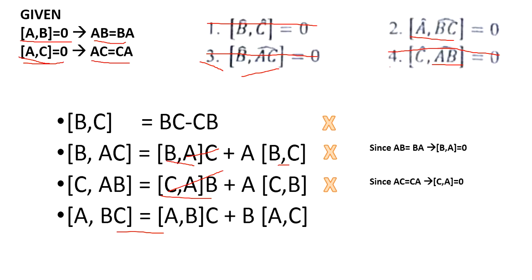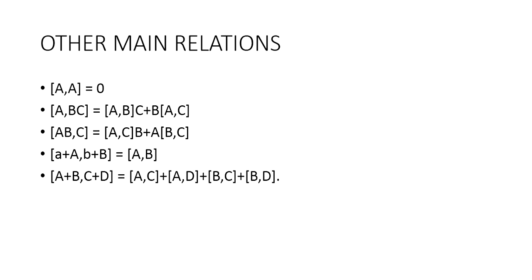Then we go to our second option. The commutator of A and BC equals the commutator of A and B times C, plus B times the commutator of A and C. The commutator of A and B is zero, so the first term becomes zero. The commutator of A and C is also zero as given, so the second term becomes zero as well. Therefore this equals zero, and the answer is option two.